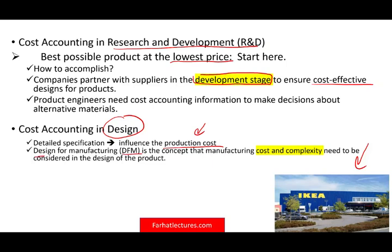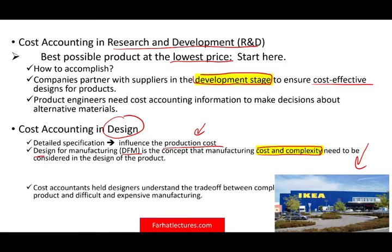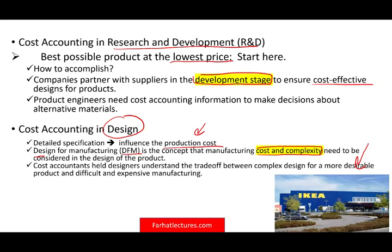There is something called DFM — Design for Manufacturing — a concept that manufacturing cost and complexity need to be considered in the design of the product. You don't want it to be complex, and you want to reduce cost because that serves the customer. Cost accountants help designers understand the trade-off between complex design for a more desirable product and difficult, expensive manufacturing. Cost is the accounting number; complexity is engineering. As long as you have both concepts making trade-offs and enough information about cost, you can create a product that's not too expensive and not too complex.